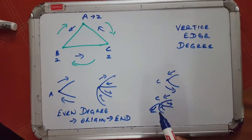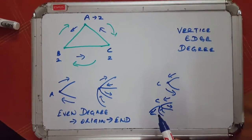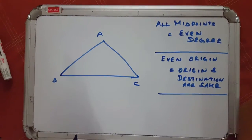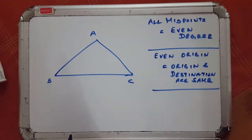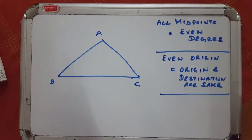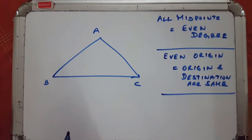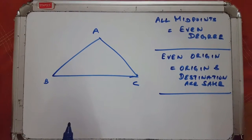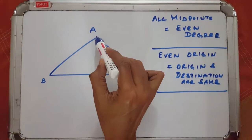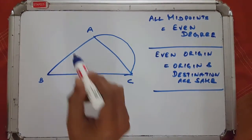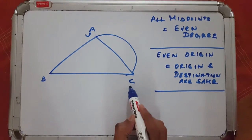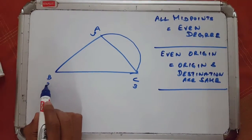So now we can see how this works. All midpoints have an even degree, and if the origin has an even degree then the origin and the destination are the same. Now let's see what happens with odd degrees. Let's draw another line connecting A and C. Now you can see the degrees: A has a degree of three, C has a degree of three, and B has a degree of two.